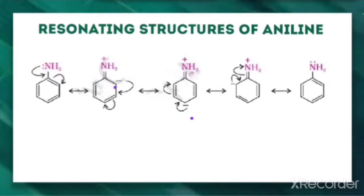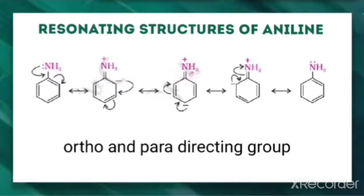So the greater electron density is at the ortho and para position relative to the NH2 group. Because of this, we can say that the NH2 group acts as an ortho-para directing group, because more electron density is at ortho and para positions, therefore the electrophilic substitution takes place at ortho and para positions, and we will be getting the ortho and para products.